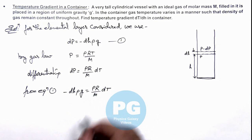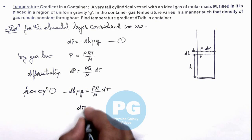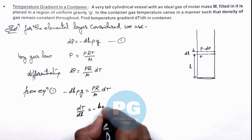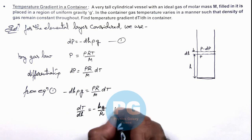Here ρ gets cancelled out, and the value of dT/dh we are directly getting, which is the temperature gradient, that is -mg/R. That is the result of this problem.